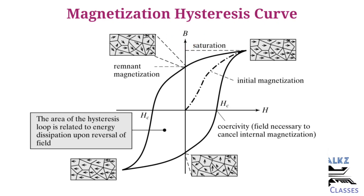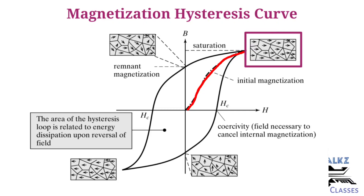For example, consider a soft iron core. When you increase the magnetic force H, the induced flux lines B increase. Then at a particular point, it will saturate. That is, after the saturation point, no more flux lines will be created inside the magnetic material. This is the saturation point.